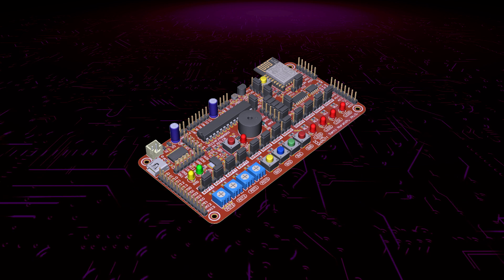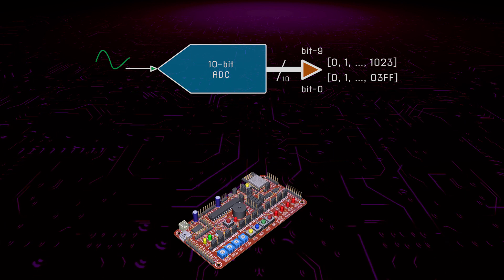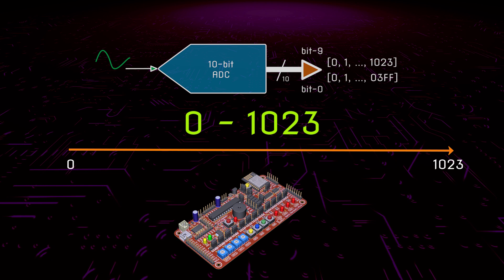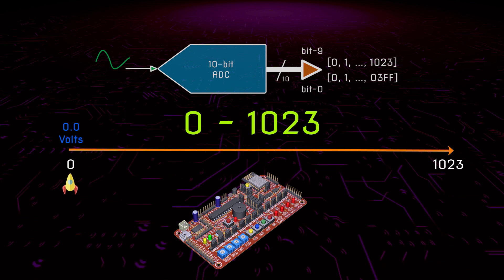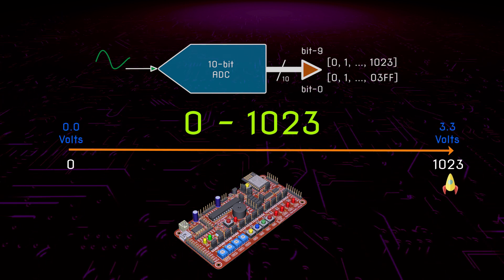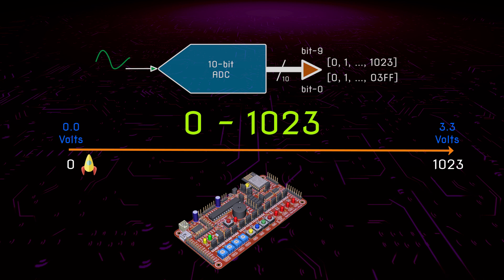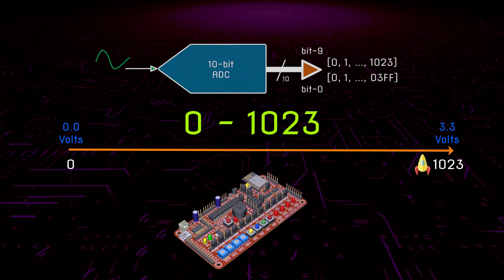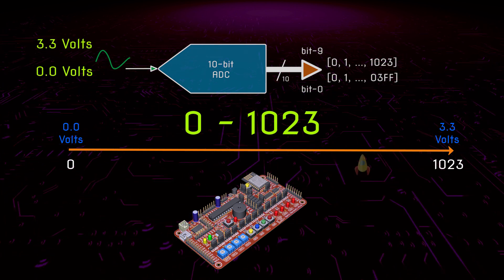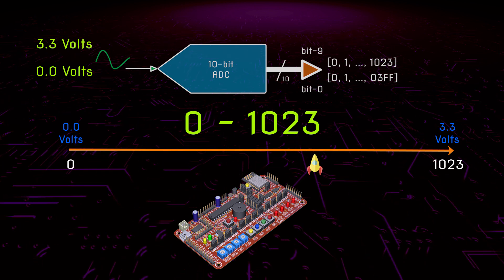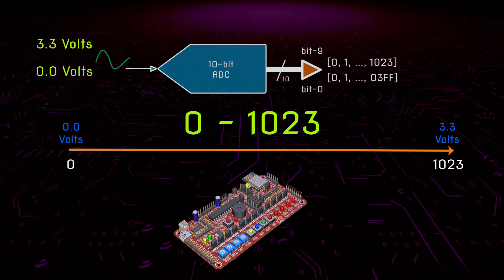In our system, the ADC of the microcontroller we use is a 10-bit ADC. It has 1024 different values starting from 0 to 1023, where 0 represents the minimum value and 1023 represents the maximum value. The 1024 steps represent the input voltage varying from 0V to 3.3V in our system. These 1024 values are enough to capture very small changes in the input voltage — in this case, the varying voltage coming from sensors.